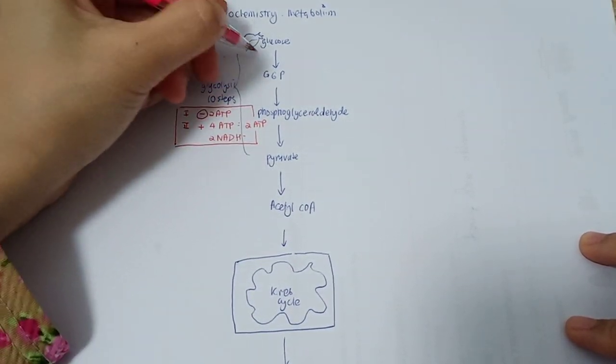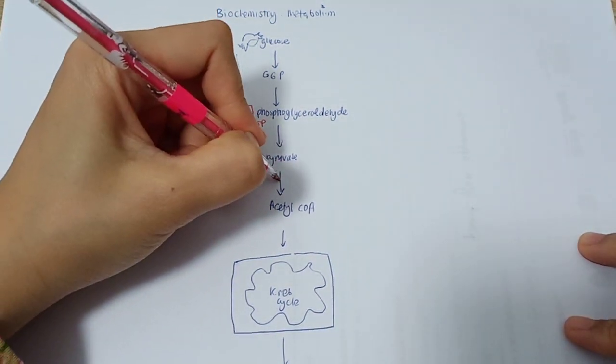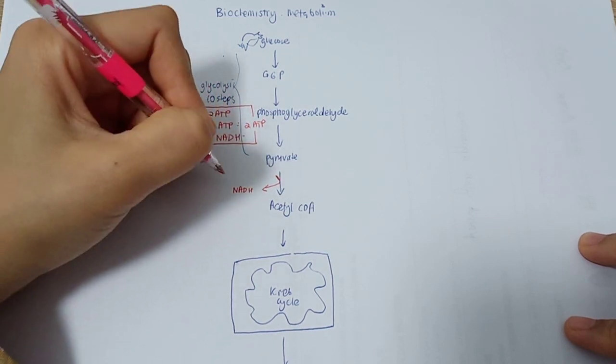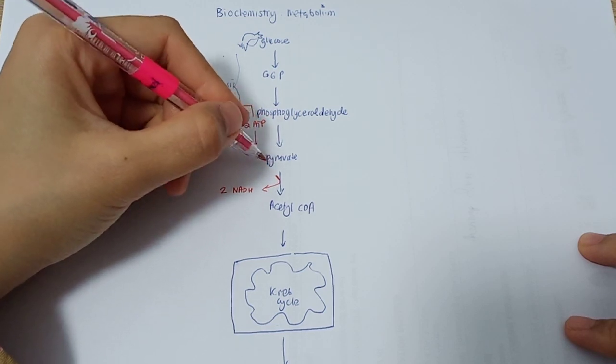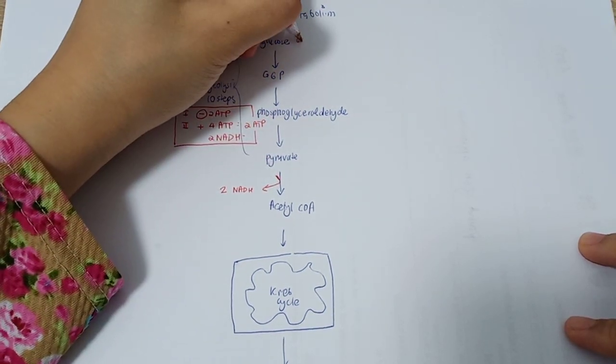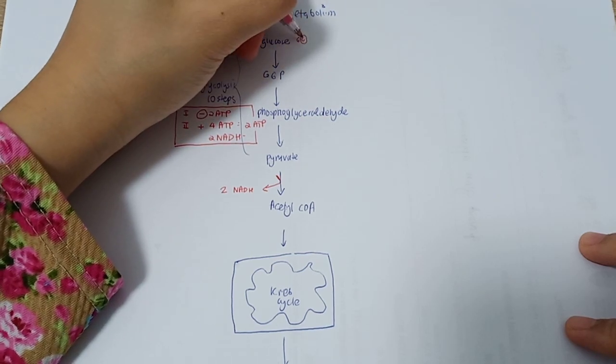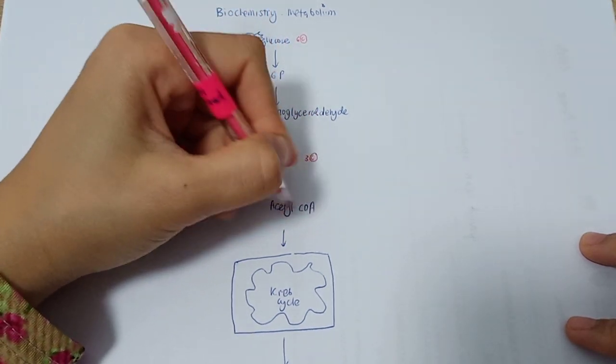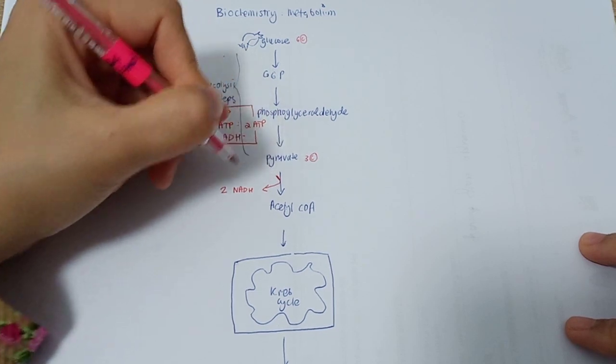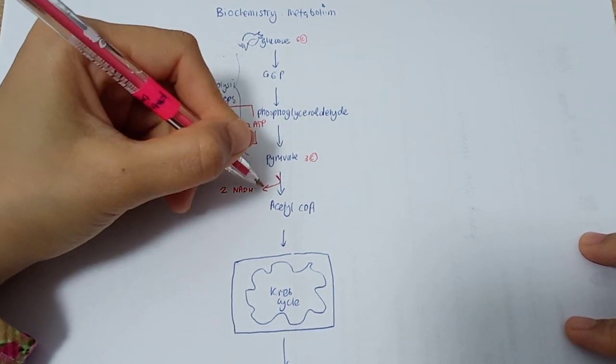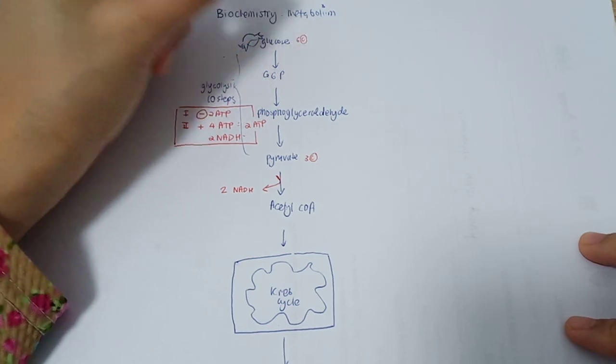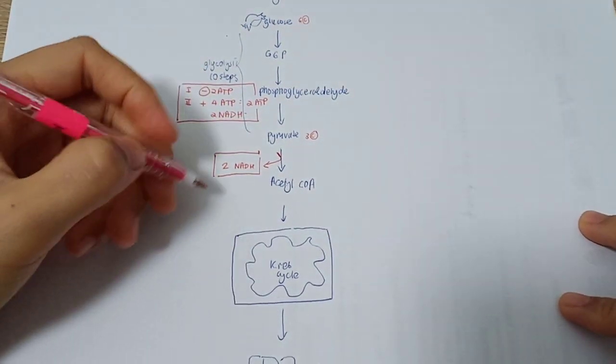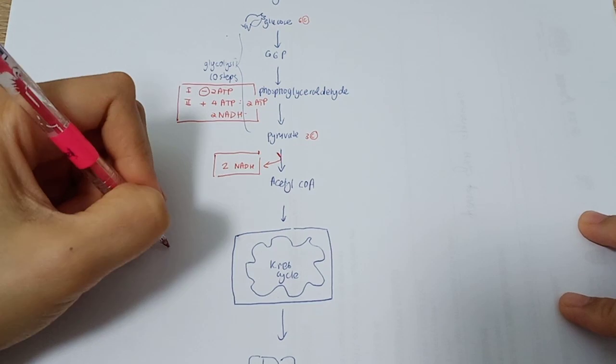The pyruvate that converts into acetyl-CoA will produce another NADH. We're going to have 2 NADH because glucose is a six-carbon structure but pyruvate is a three-carbon structure, and acetyl-CoA is also a three-carbon structure. We're going to produce 2 NADH because it's coming from the six-carbon structure.